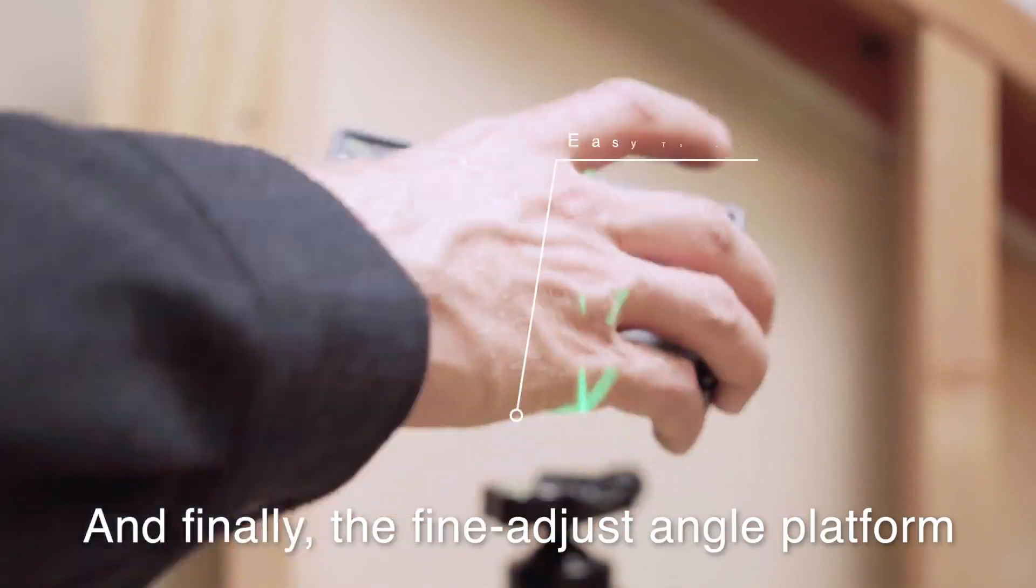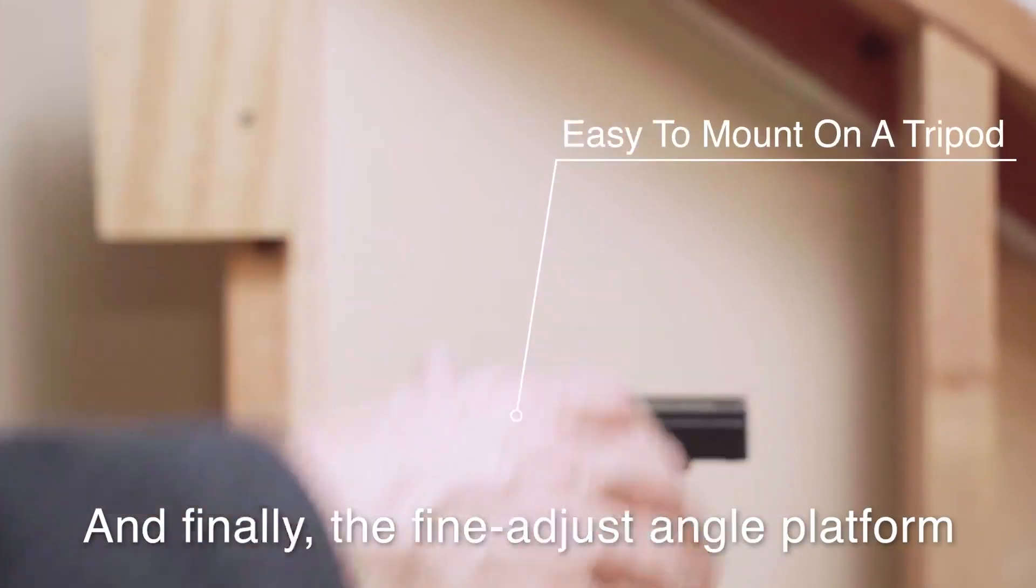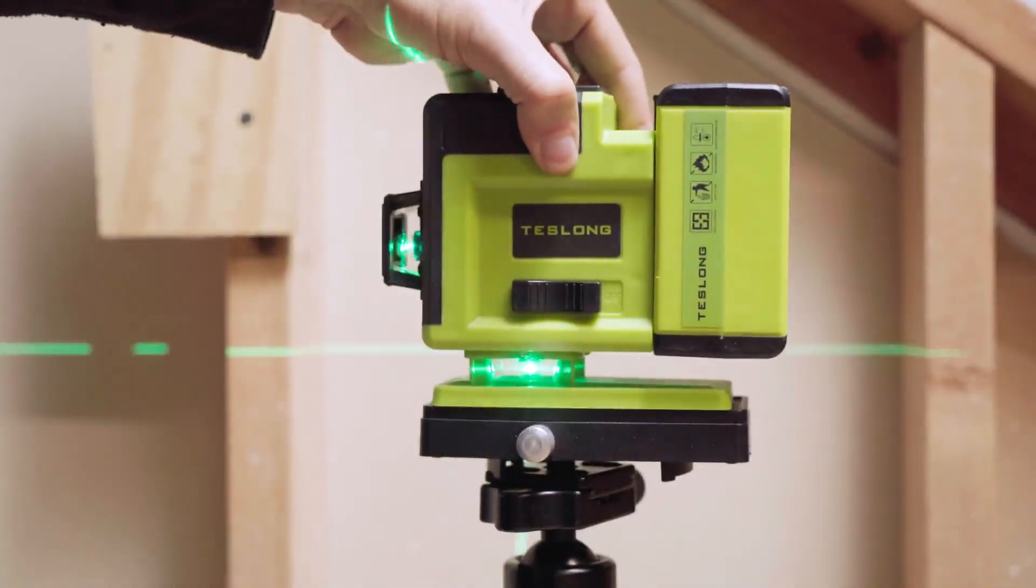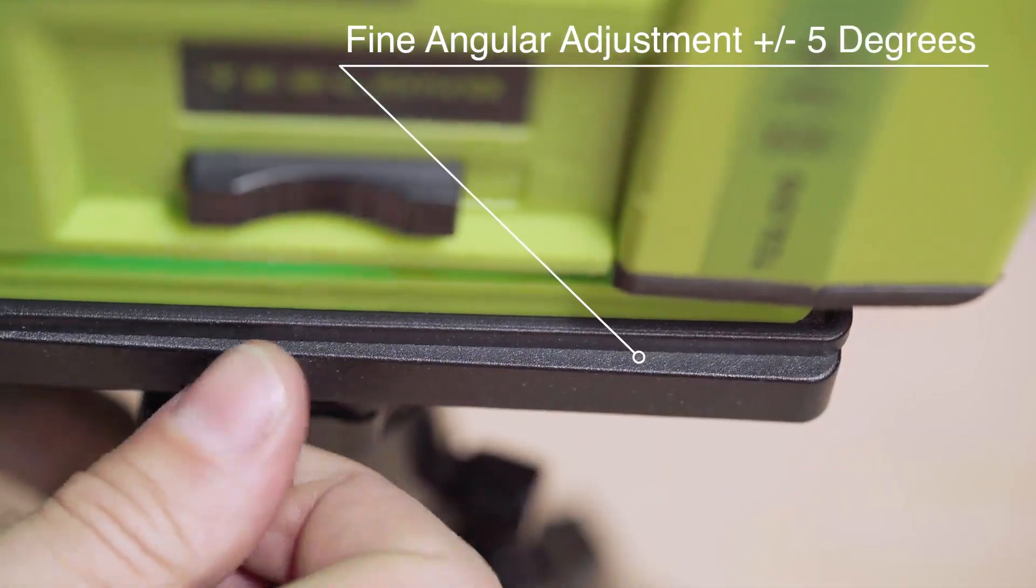How about the fine adjust angle platform? It has threads to mount on a tripod and turning the knob fine tunes the platform's angle plus or minus 5 degrees.